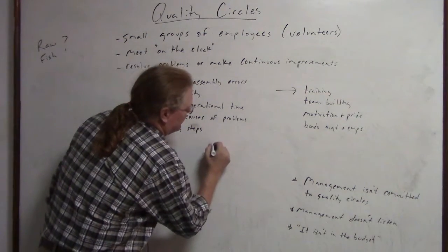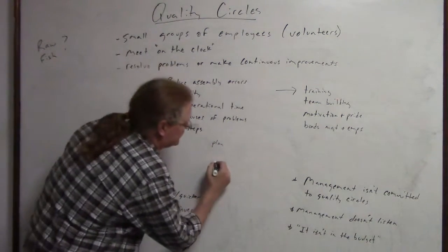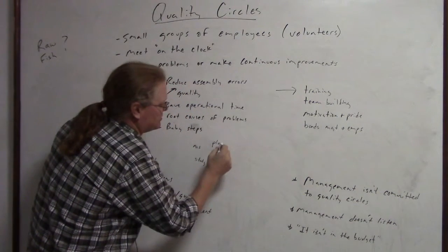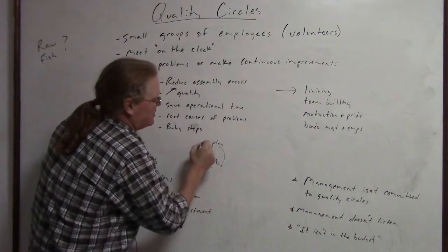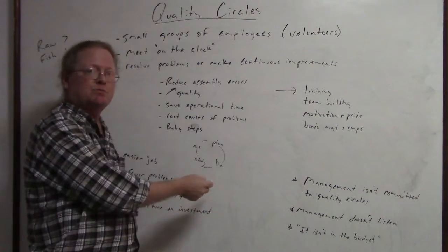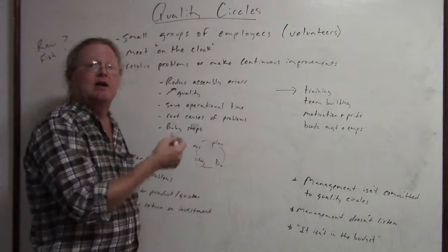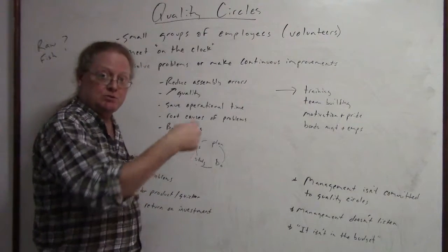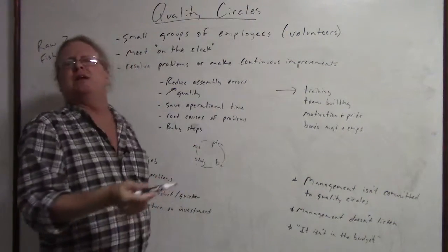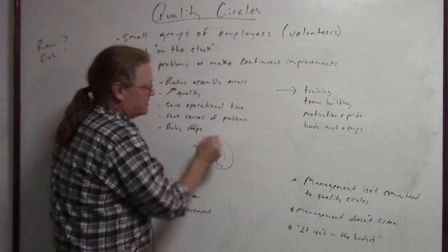This might turn into a Plan-Do-Study-Act cycle, which I'm sure you've seen before, where the team comes up with a plan to make an improvement. They try it out on a small scale, study the results. If the results are good, they adopt that and maybe spread it operation-wide, or they decide that the plan didn't work and wasn't worth it, so they come up with another plan. They continuously do that.